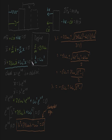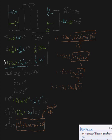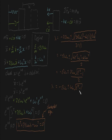Hey guys, in a previous video I showed you that if we have a second order homogeneous differential equation like this, then x equals e to the lambda t is a solution to this equation if and only if lambda is equal to this. I've shown that in a previous video.